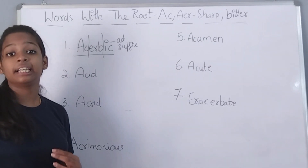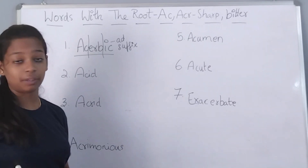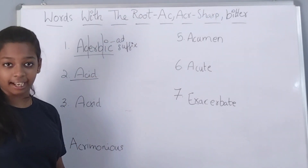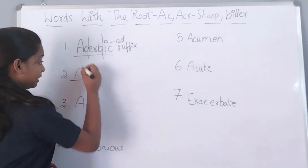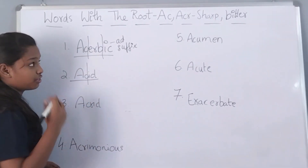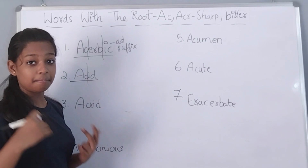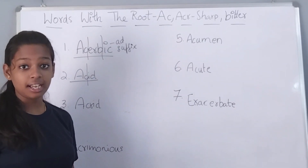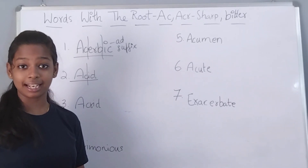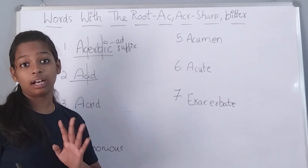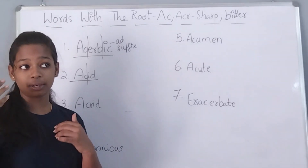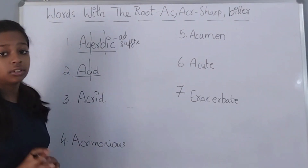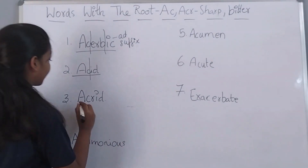The next word is acid. Acid, you have heard many times. The word has one root word in it, that is AC which means sharp or bitter. The word acid actually means a chemical, usually a liquid that has hydrogen and has pH levels less than 7.